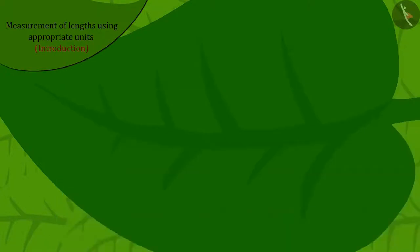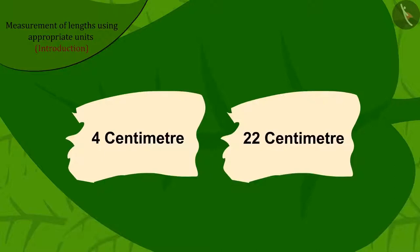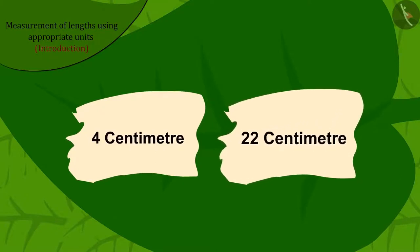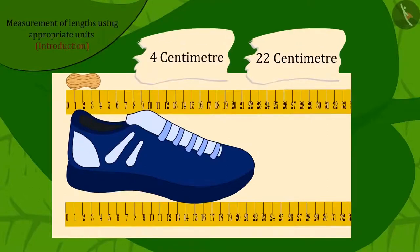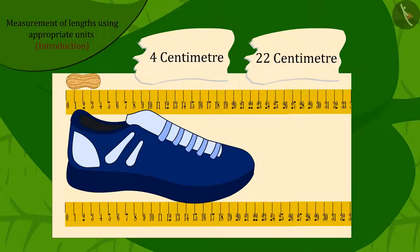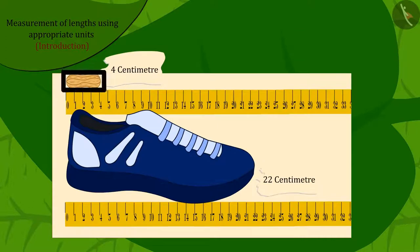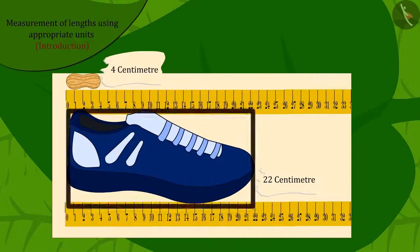Chanda then found two pieces of paper with 'four centimeter' and 'twenty-two centimeter' written on them. Can you match the length of the remaining two objects with their correct lengths? Because the length of a peanut is much smaller than that of a shoe, the length of the peanut will be four centimeters and the shoe length will be twenty-two centimeters.